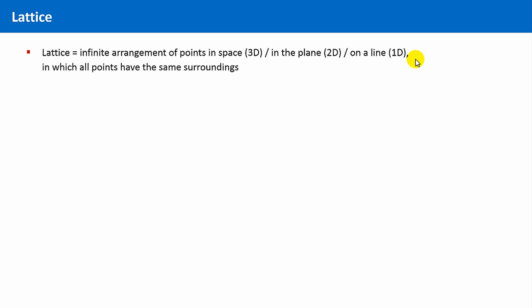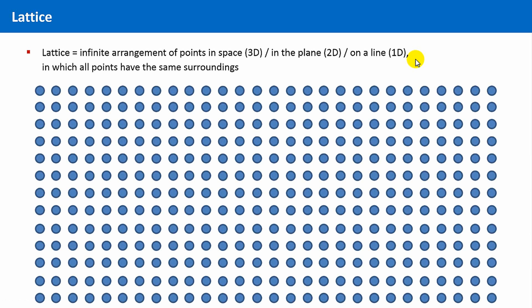That means, a lattice in the plane looks like that. A genuine lattice would be infinite, but that wouldn't fit onto the slide, so just imagine that it is almost infinite. And now, we see that every single point of the lattice has the same surroundings. That is true for this point, with these neighboring points in the first, second, third sphere, and so on.